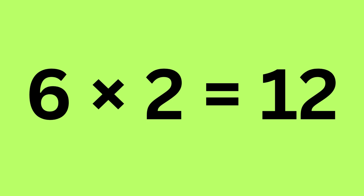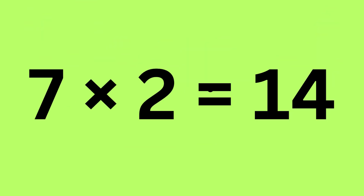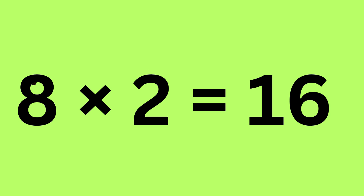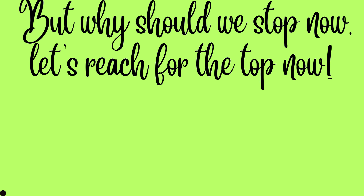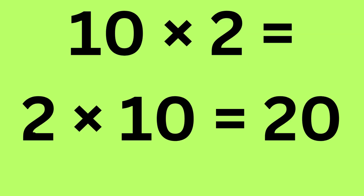6 times 2 is 12 — we are not all done. 7 times 2 is 14, 8 times 2 is 16, 9 times 2 is 18. But why should we stop now? Let's reach the top now!